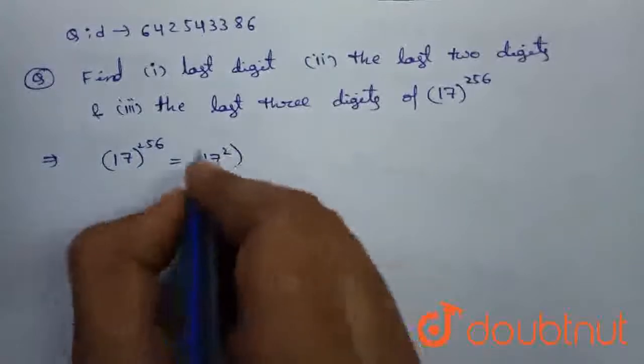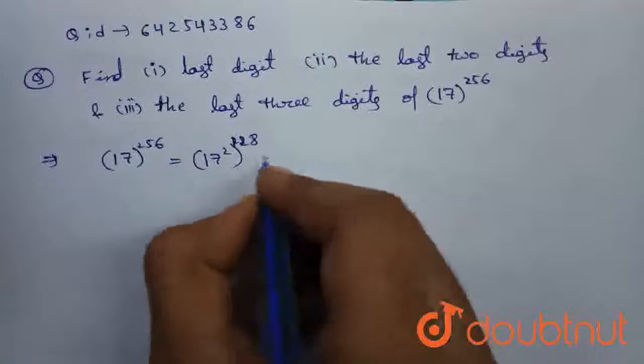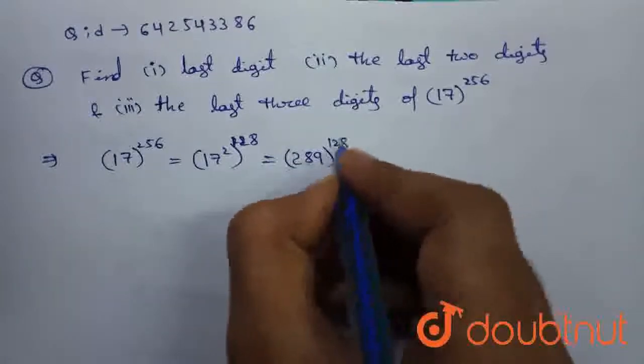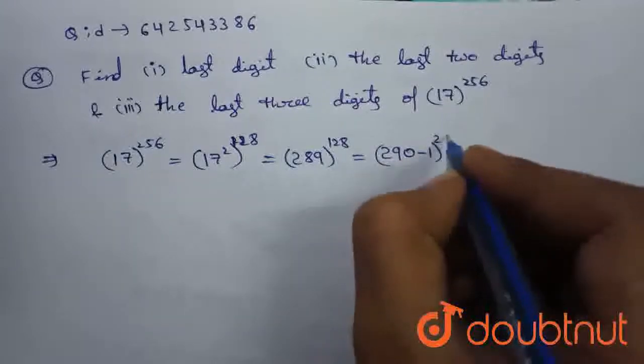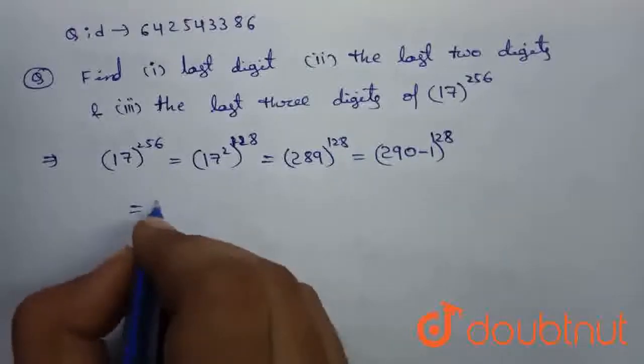which is equal to 17 square power 128, which is equal to 289. 17 square is 289 power 128, which is equal to 290 minus 1 whole power 128. We need to use the binomial expansion now.